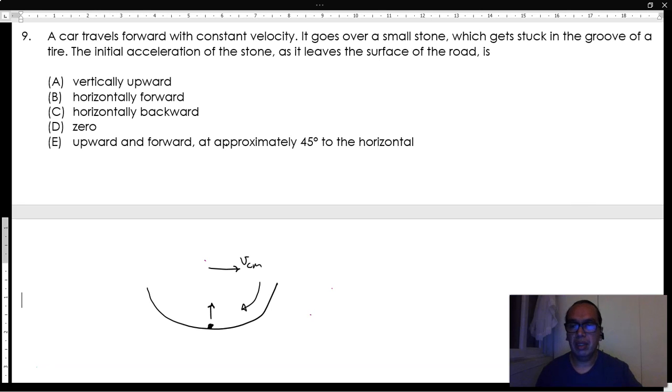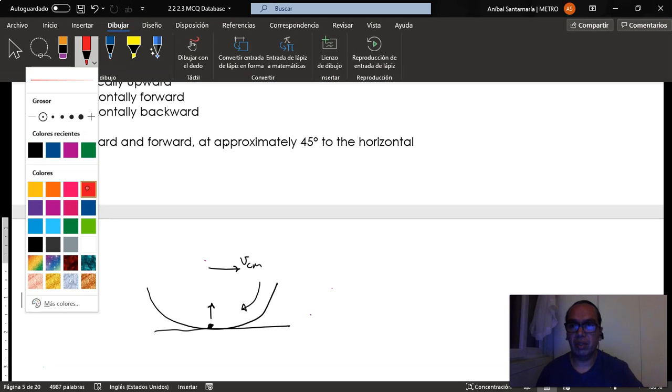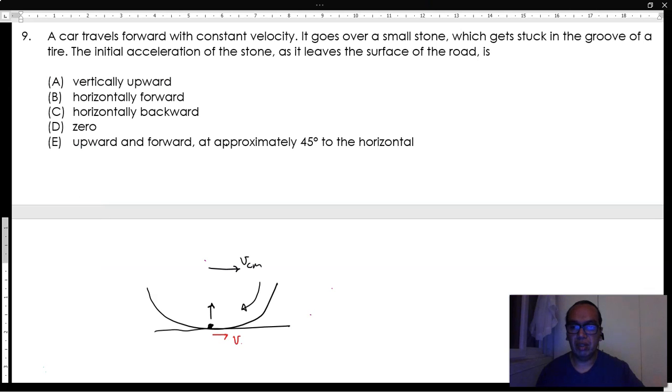Therefore, the change in velocity is directly upward because at that instant there is no horizontal velocity for that section of the tire. The velocity in the x direction is zero and there is only some velocity in the y direction.